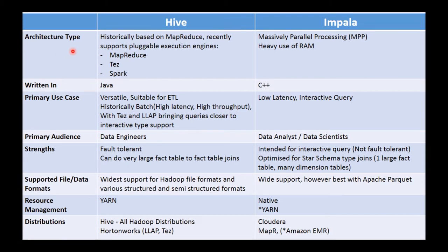Moving on to the actual differences in terms of how these two technologies operate. The first port of call is understanding, at a high level, the mechanics of how these two systems work. Hive historically was based on the native Hadoop MapReduce technologies. MapReduce is a distributed processing technique originally created by Google, and has been quite prominent in the Hadoop world.